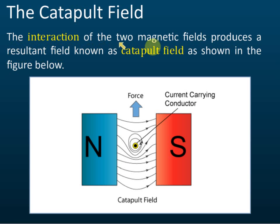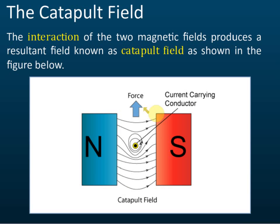The interactions of two magnetic fields produces a resultant field known as the catapult field. I will explain how this field is produced, because in exams they may ask you to draw the catapult field. So you need to know how it is produced and how to draw it. Now let's go to the whiteboard — let's say we have two magnets.